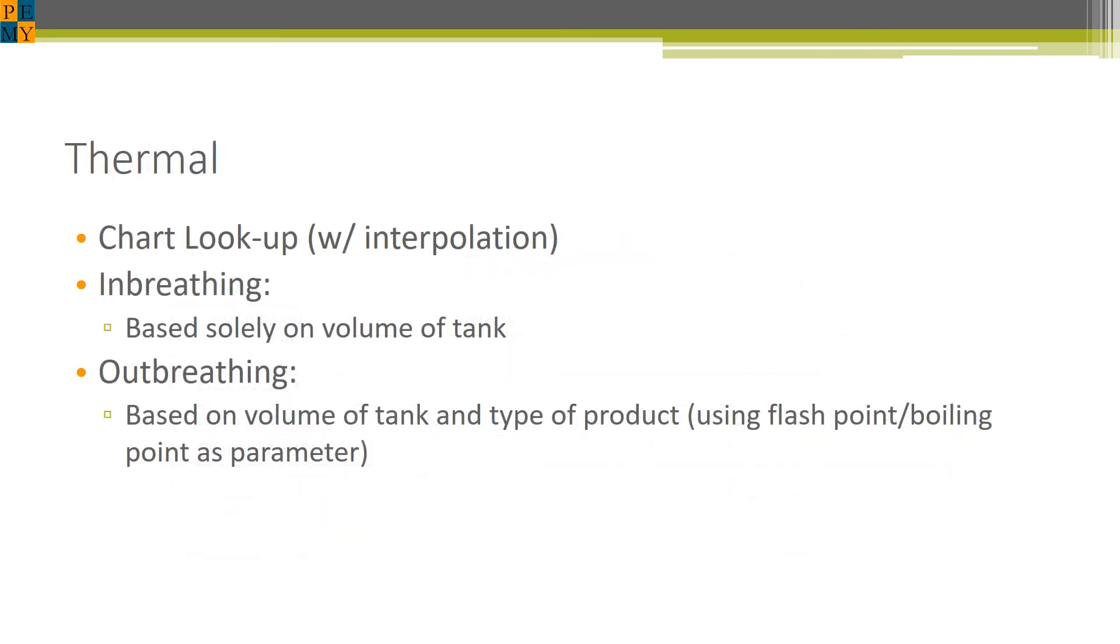For thermal effects, we essentially look up the value in a table where the input is really only dependent on the volume of the tank. The annex does not consider insulation or where the tank is located. For outbreathing, if the tank is volatile, there is also an additional factor to account for there. Based on these inputs, we look up the value in the table and that is the required flow rate necessary. For intermediate values that are between rows, one must interpolate between these values to find the actual flow rate necessary for thermal venting.